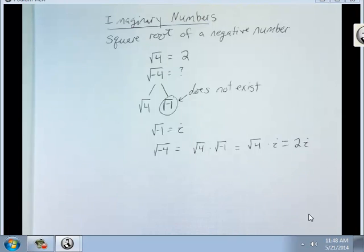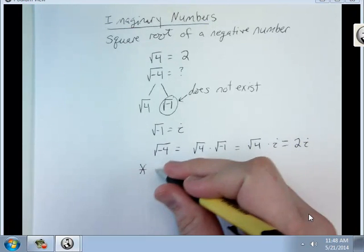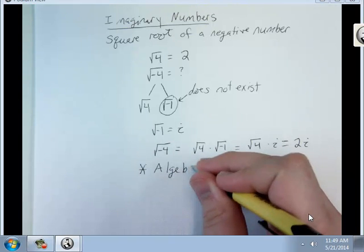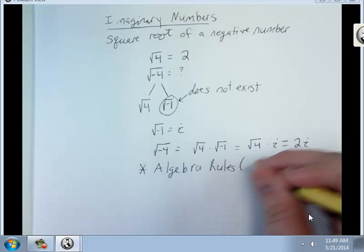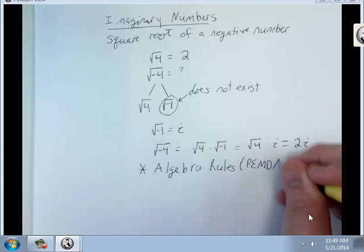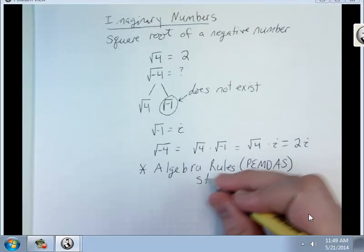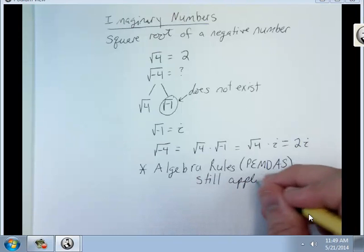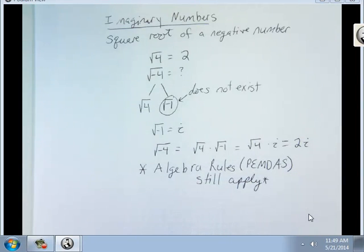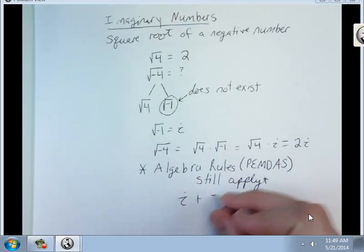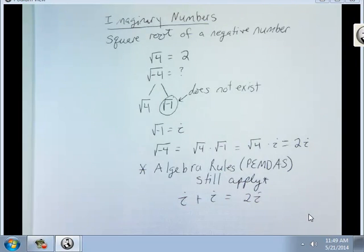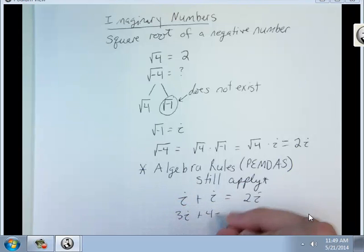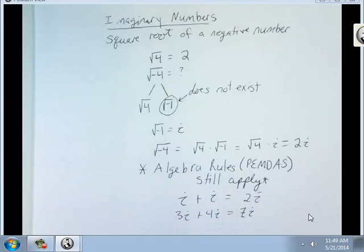The key to remember is that algebra rules, like PEMDAS, still apply. So that means that i plus i equals 2i, 3i plus 4i equals 7i.